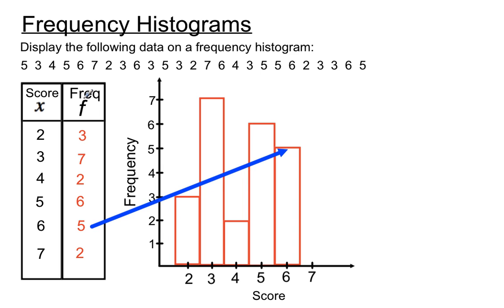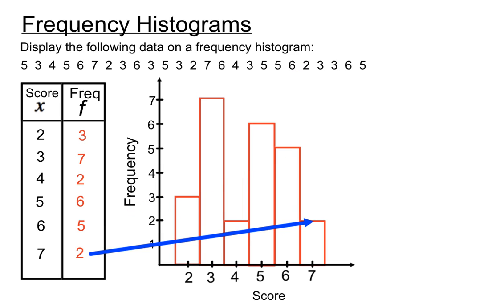So that's one of the features of frequency histograms or any histogram really. Now this last one we're entering is the score of 7 that occurs twice.